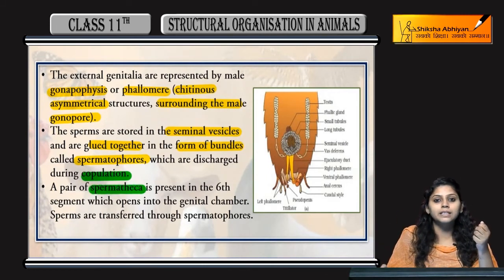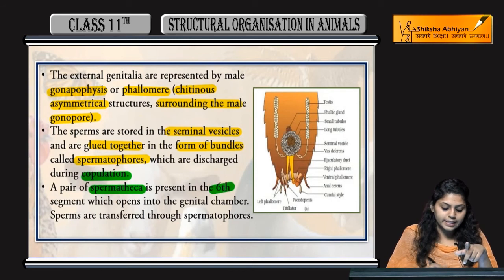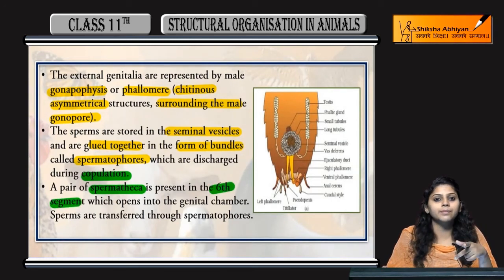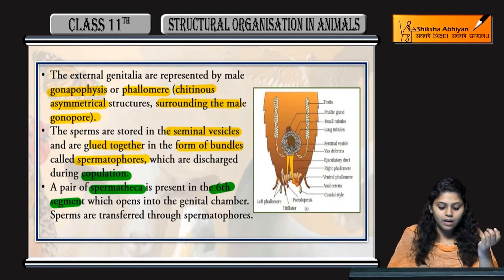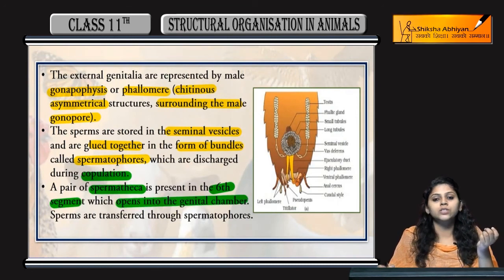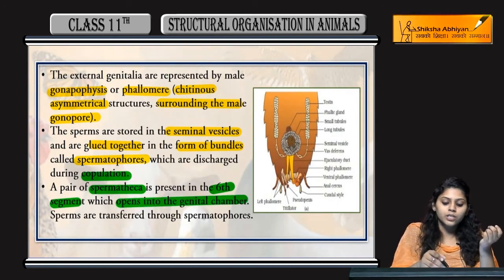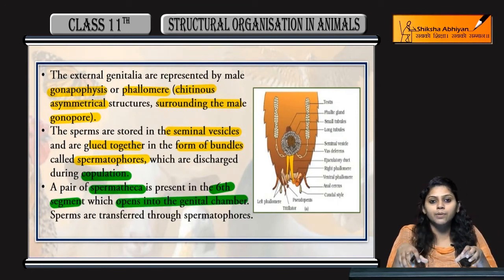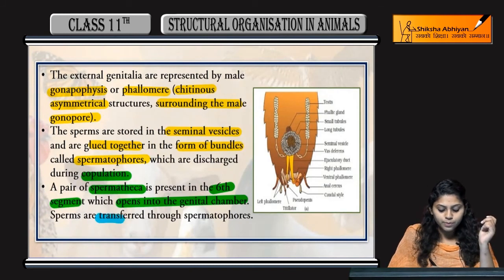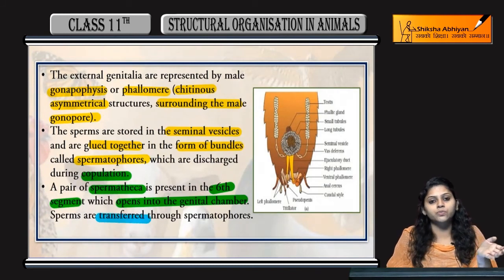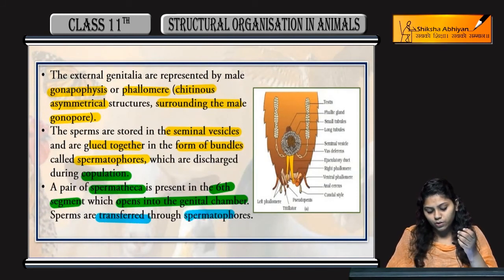A pair of spermathecae is present in the 6th segment, which opens into the genital chamber. Sperms are transferred through spermatophores.